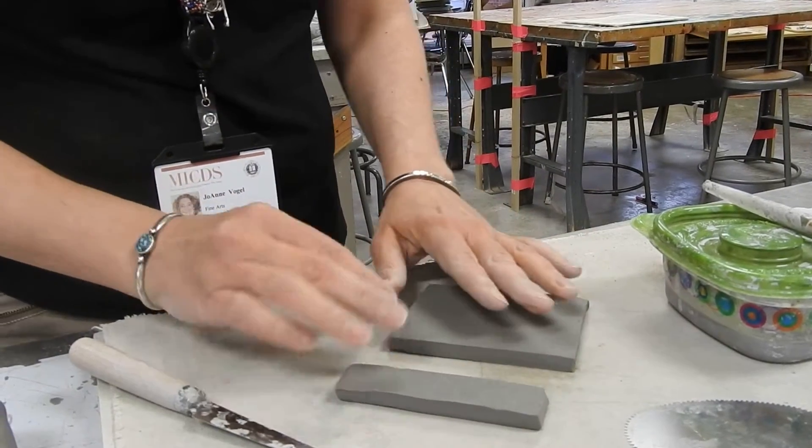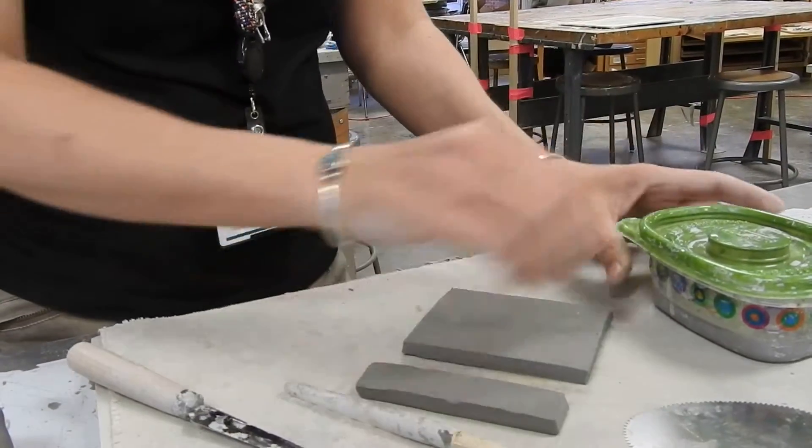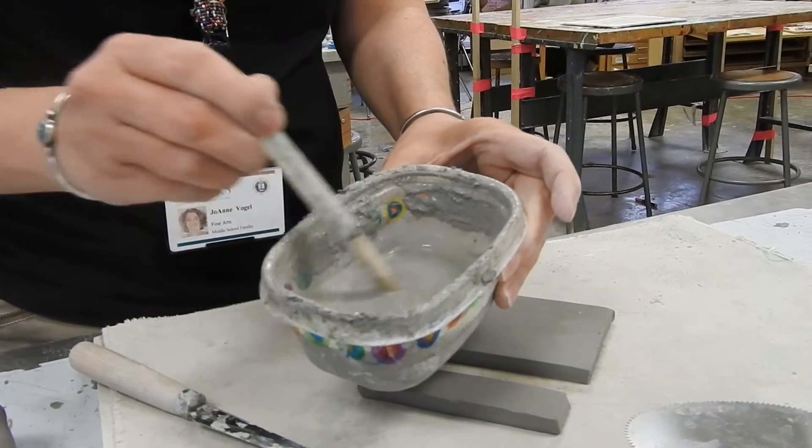So what you want to do is slip and score. This is what that means. Our slip is in these containers, and all it is is clay with a lot of water in it.